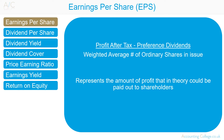Earnings Per Share, referred to as EPS, is profit after tax less preference dividends divided by the weighted average number of ordinary shares. It represents the amount of profit that, in theory, could be paid out to shareholders. The questions to ask are: is earnings per share consistent, and is it growing or reducing? Earnings per share is easy to understand and figures are readily available, but research has shown a poor correlation between EPS growth and shareholder value, and accounting treatments can distort results.